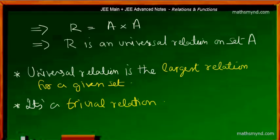Now there are two interesting points to note as far as the universal relation is concerned. As I already told, because all possible ordered pairs are involved in this particular relation, we are dealing with the largest relation possible for a given set.